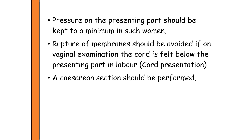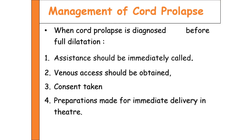Rupture of the membrane should be avoided if on vaginal examination the cord is felt below the presenting part during labor. A cesarean section should be performed if cord prolapse is present and vaginal delivery is not safe.